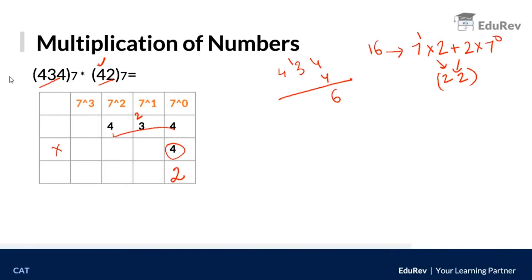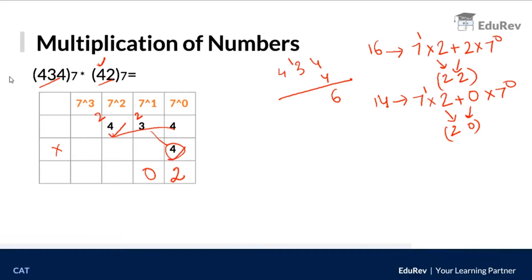Next, 3 times 4 is 12, plus the carry of 2 gives 14. Converting 14 to base 7: 7 twos are 14 exactly, so it is 20 in base 7 — write 0, carry 2. Then 4 times 4 is 16, plus carry 2 gives 18. Eighteen in base 7: 7 twos are 14, remainder 4, so 18 is 24 in base 7 — write 4, carry 2. The result of 434 times 4 is 2402.